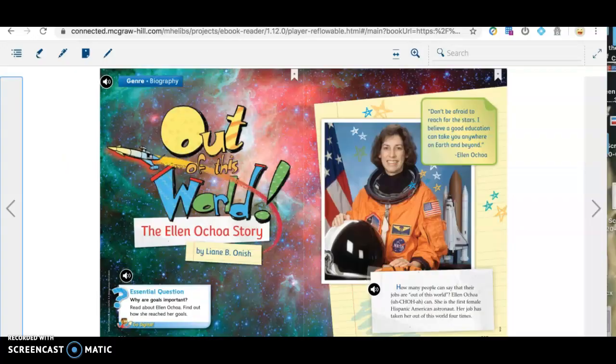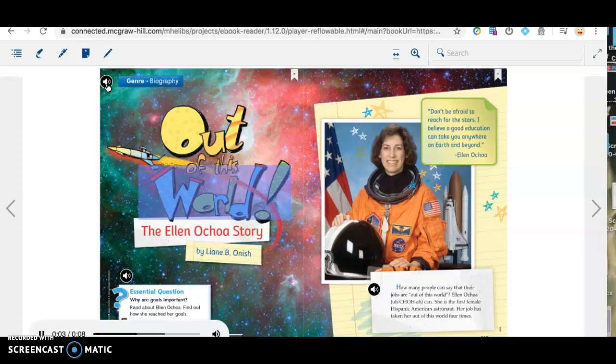All right. So here's your passage for today. It is titled Out of This World. And it's about a real astronaut named the Ellen Ochoa story. I'm going to play it and we're just going to listen to and look for key features that make this a biography. So let's listen. Genre. Biography. Out of This World. The Ellen Ochoa story. Essential question. Why are goals important? Read about Ellen Ochoa. Find out how she reached her goals.